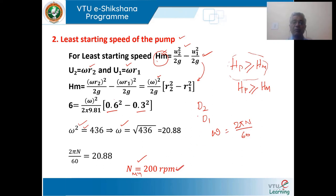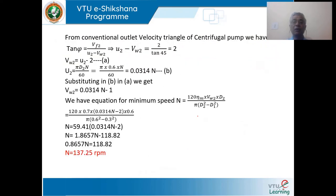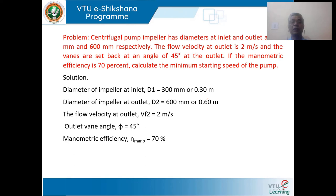Alternatively, using the direct formula: n_minimum = 120 × eta_m × vw2 × d2 / (π × (d2² − d1²)). In the previous problem, eta_m was calculated (not given), vw2 was obtained from the velocity triangle. Using this formula gives the same answer. This direct formula application can also be used for similar problems.